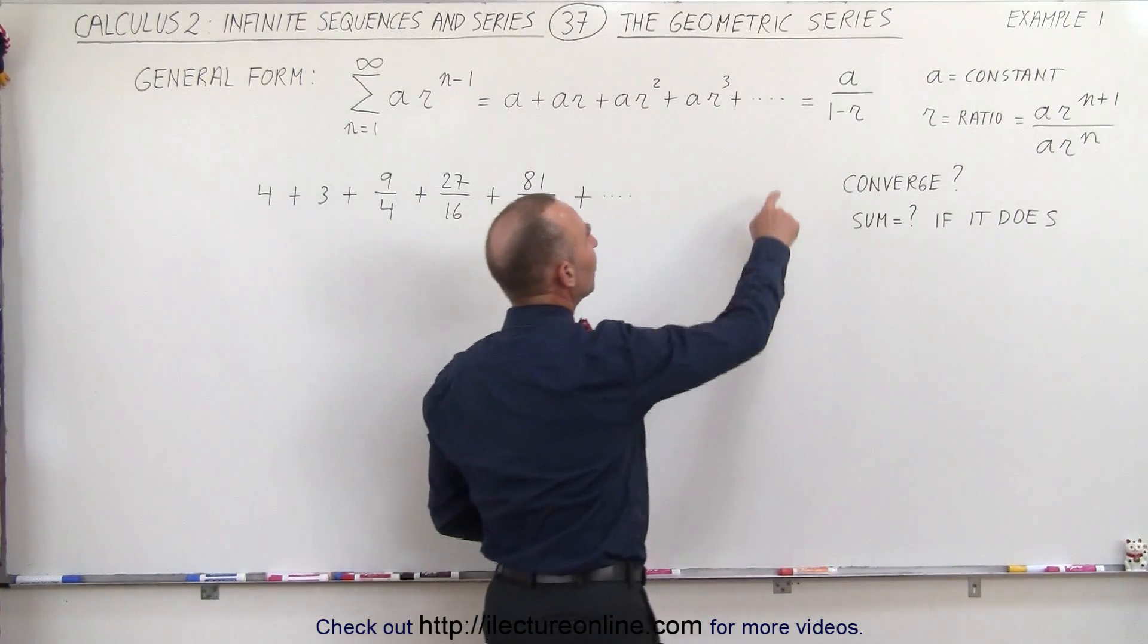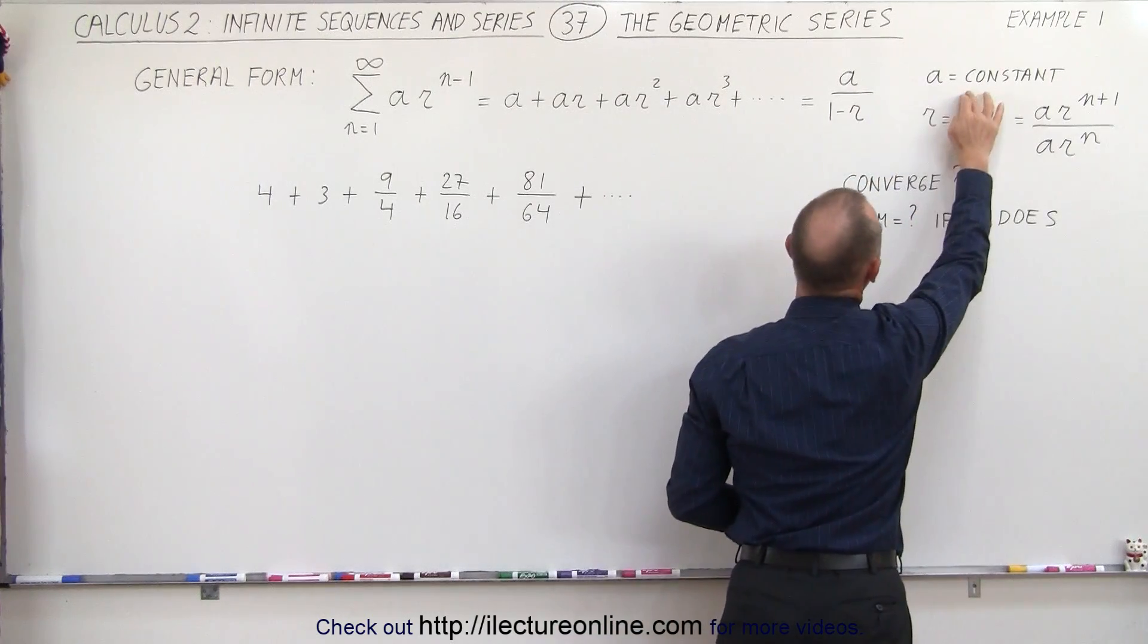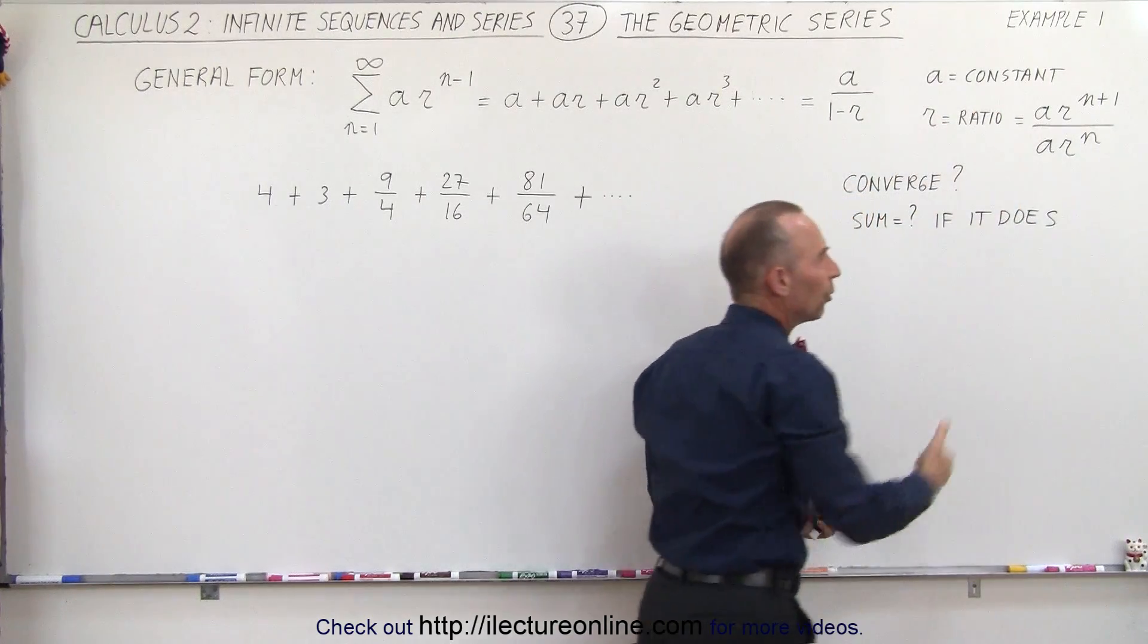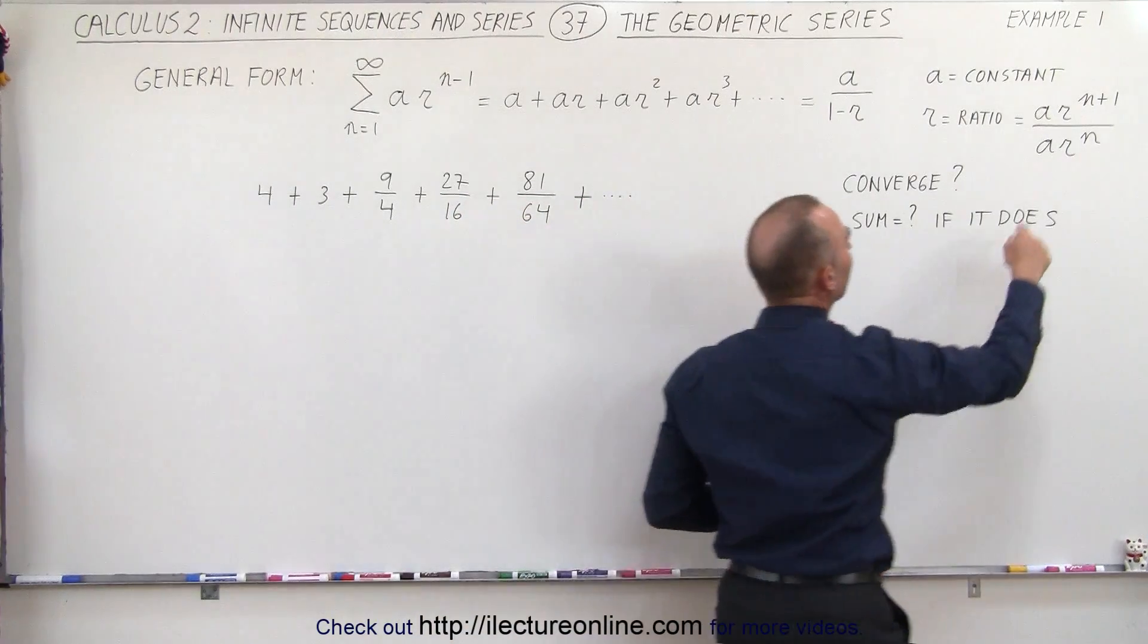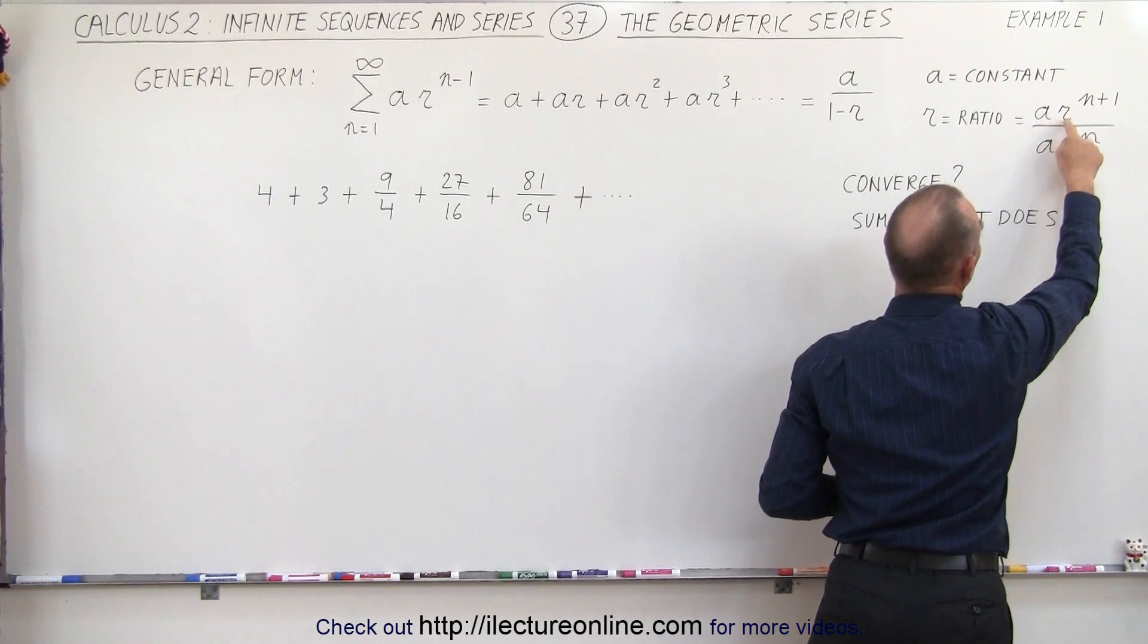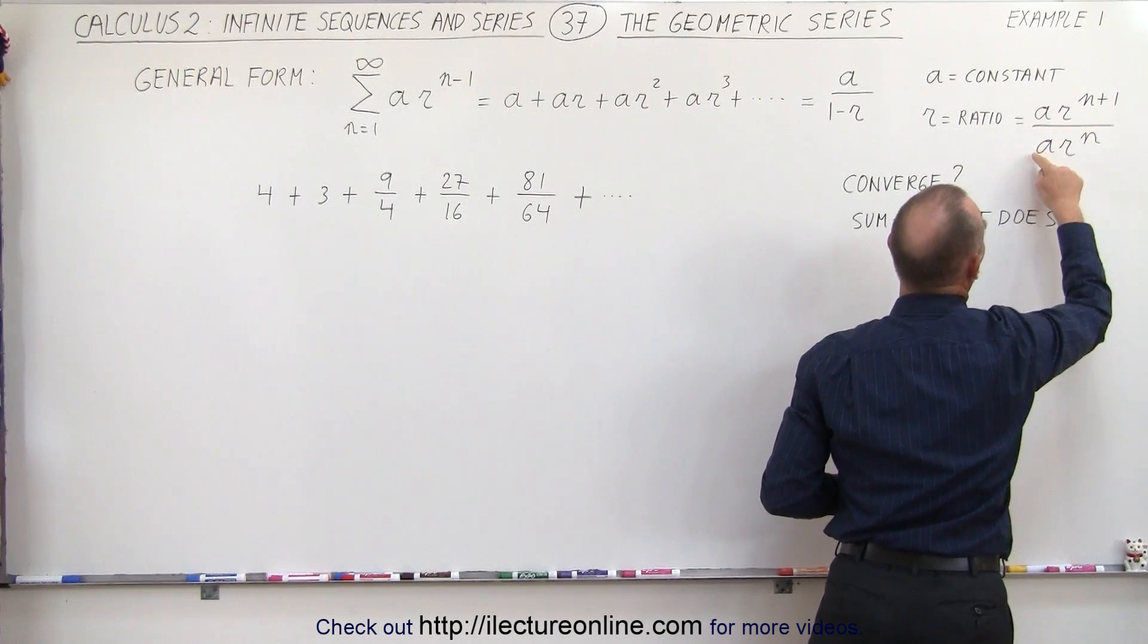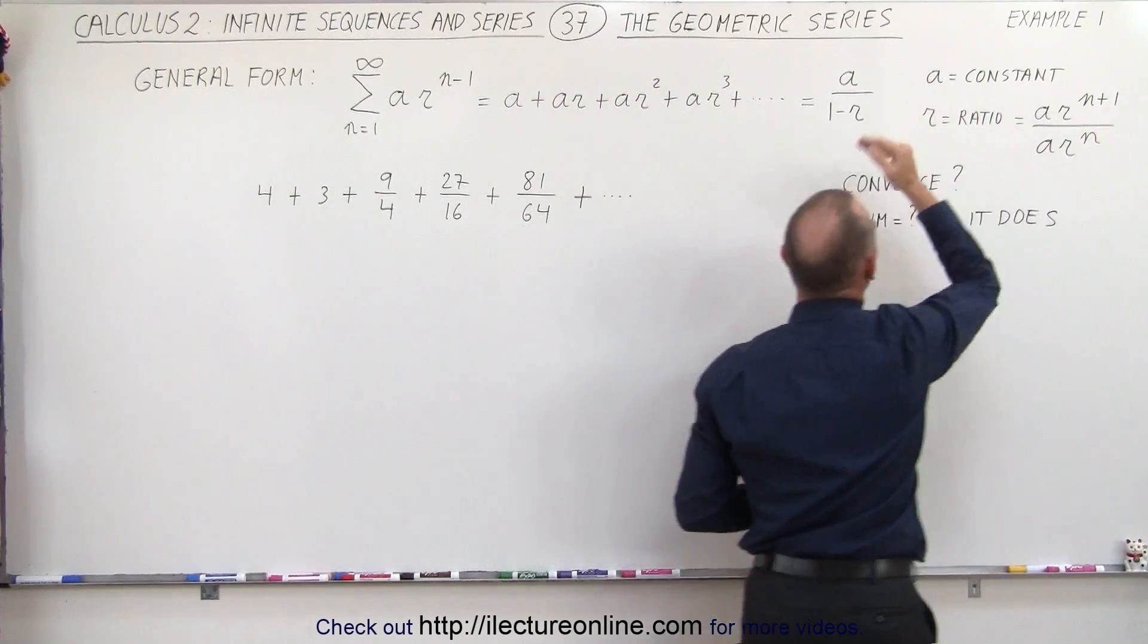We know that equals a divided by 1 minus r, where a is a constant and r is the ratio of two consecutive terms. For example, the n plus 1 term divided by the n term, so we have a times r to the n plus 1 divided by a times r to the n. The ratio of that will be r, that's the common ratio.